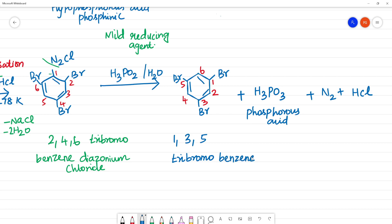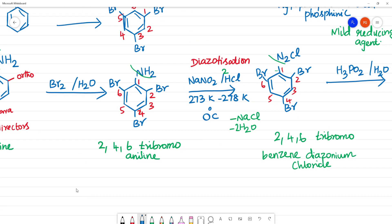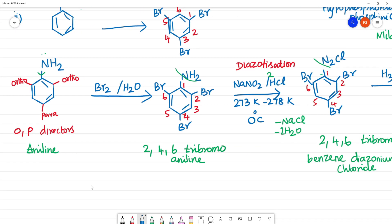So, we take the three steps. Step one is bromination. Step two is diazotization. Step three is reduction — mild reducing agent. This is the bromination. Clear?